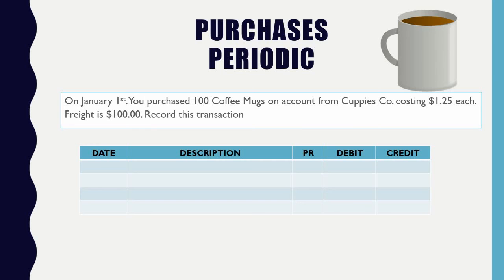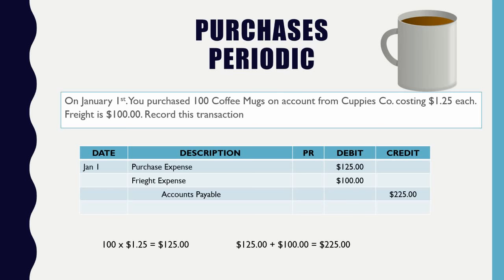For this example, we obviously need to make the purchase first. On January 1st, you purchase 100 coffee mugs on account from Cuppy's Co. Each cup costs $1.25 and shipping costs $100. Record this transaction. We're dealing with periodic inventory, so we recognize the date, purchase expense, freight expense, and accounts payable based on the scenario.